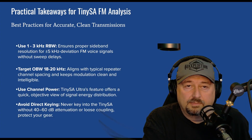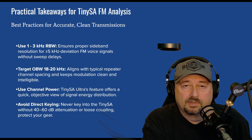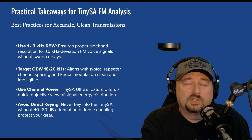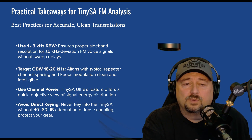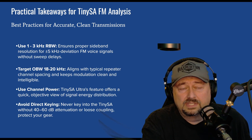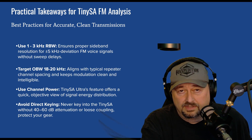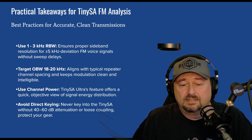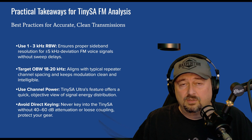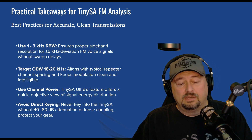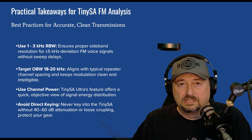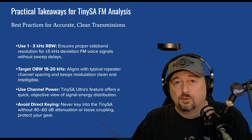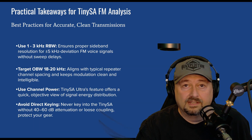Based on everything we just talked about, the four things to remember for this test are: use 1 to 3 kilohertz resolution bandwidth; target 16, 18, or 20 kilohertz channel spacing; use the channel power feature on your TinySA; and most importantly, avoid direct keying — use a pad, attenuator, or directional coupler to make sure your full power transmission does not go into your TinySA so it survives to see another day.